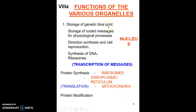The nucleus stores the genetic blueprint of a cell in the form of coded messages for physiological processes. It directs synthesis and cell reproduction, including synthesis of DNA. The ribosomes carry out protein synthesis,